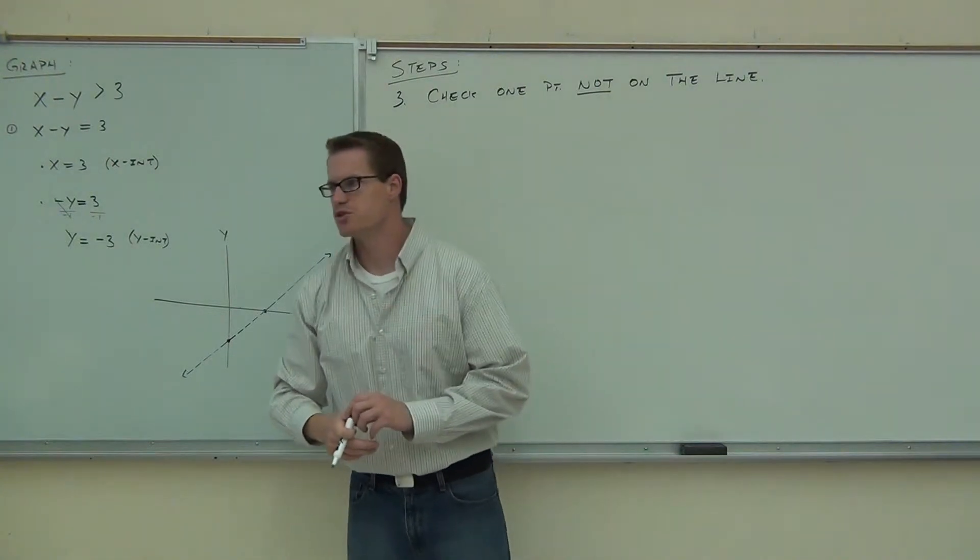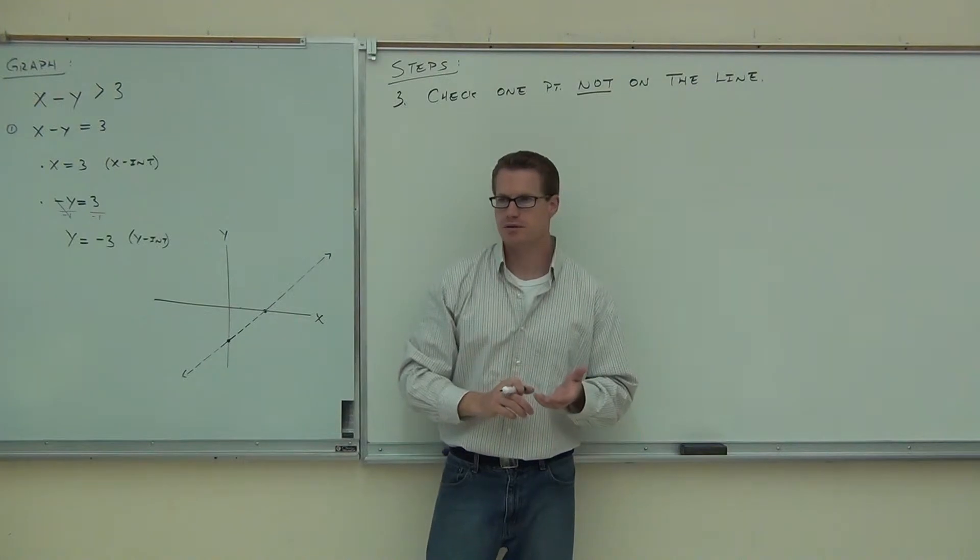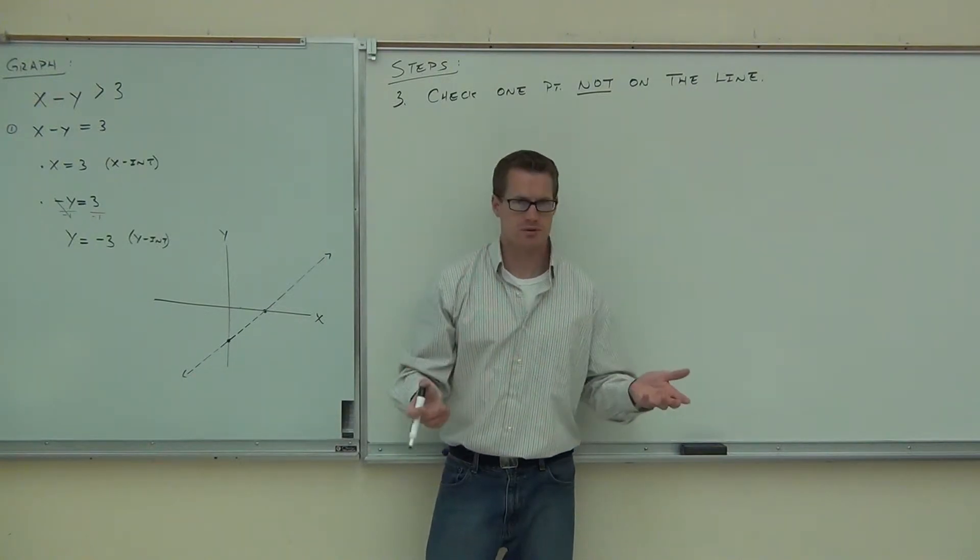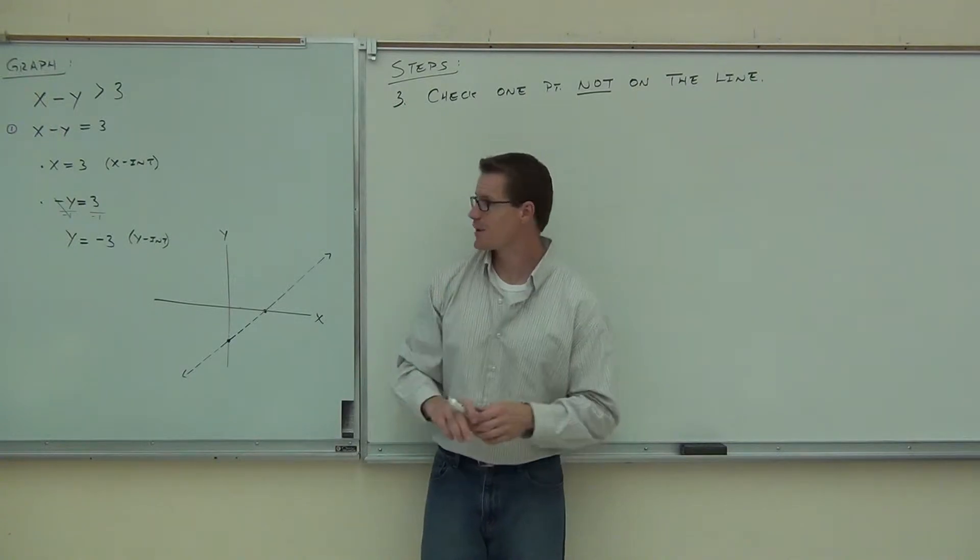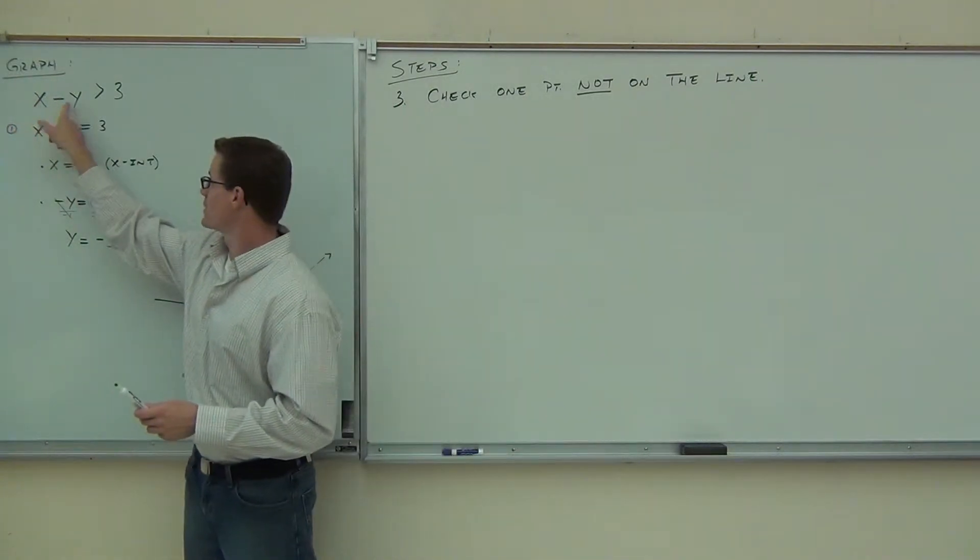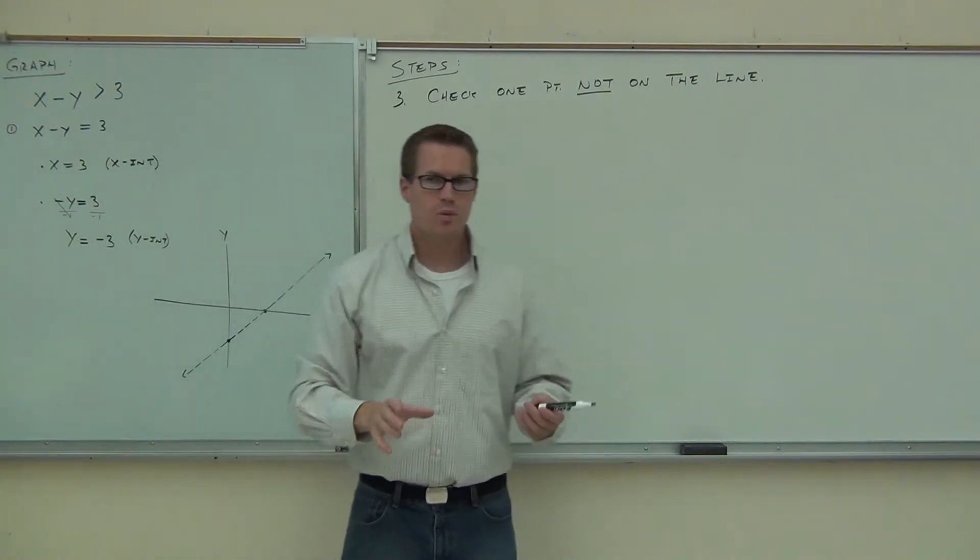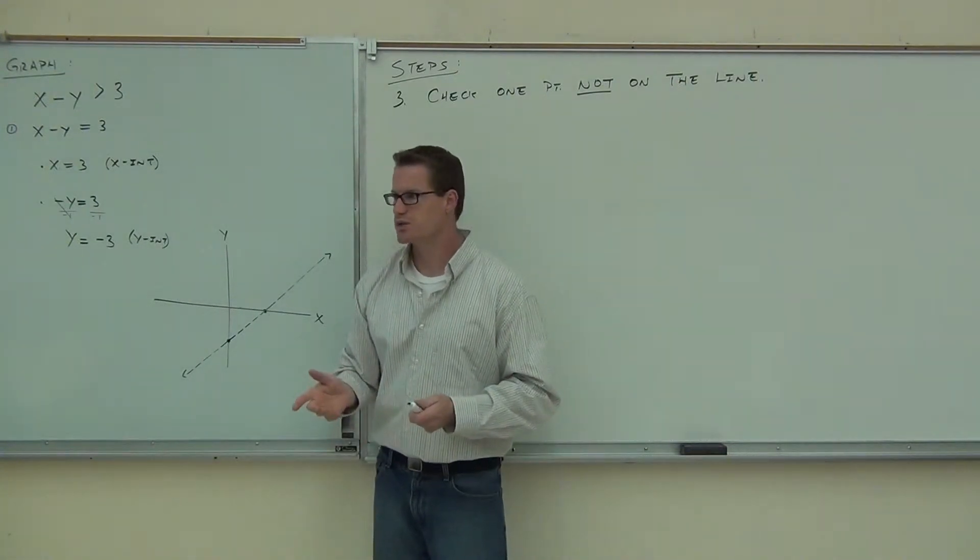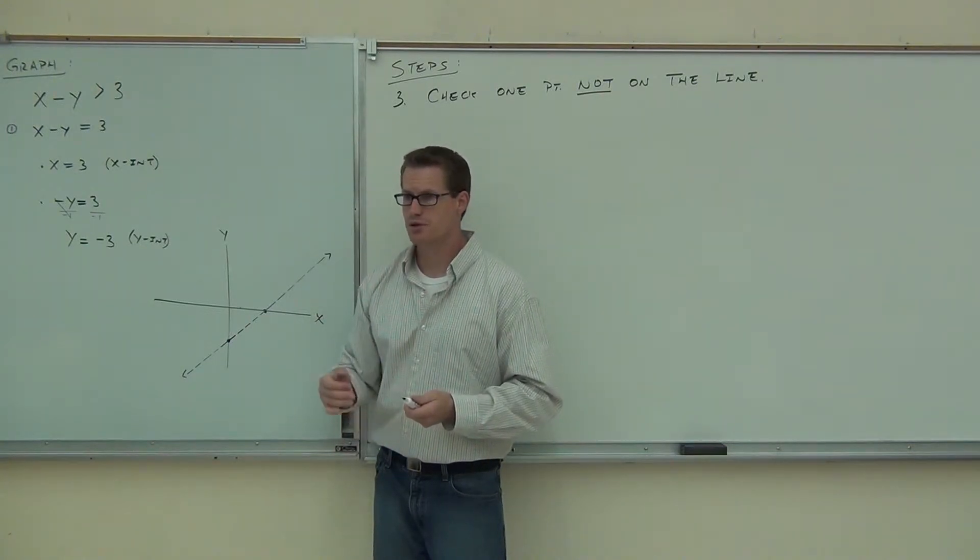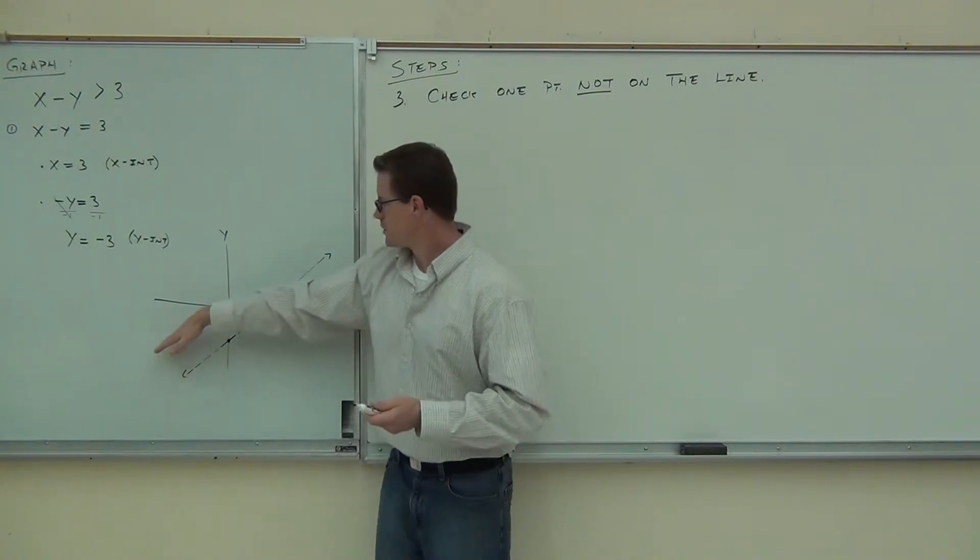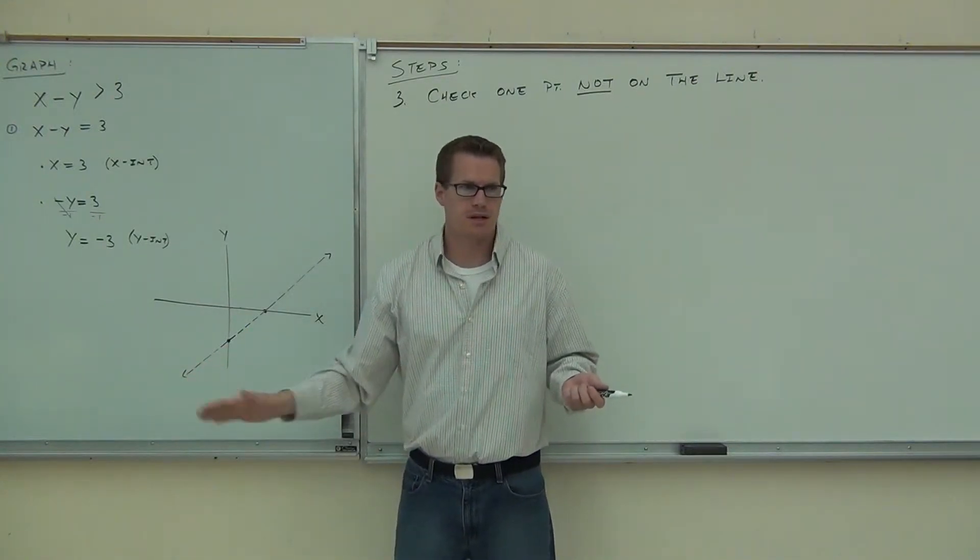Now, there's one point that we should try to use all the time if we can. What point do you think that is? Why would we want to use zero, zero? Yeah, it's easy. We don't have to even do any math, right? If you pick zero, zero, what's zero minus zero? Hey, it's zero, right? That's nice. That's very easy to check. There's only one instance where you cannot use zero, zero. If our line goes through the origin, then we can't use it. You with me on that? Because then it wouldn't tell you a side. Then you pick another one.